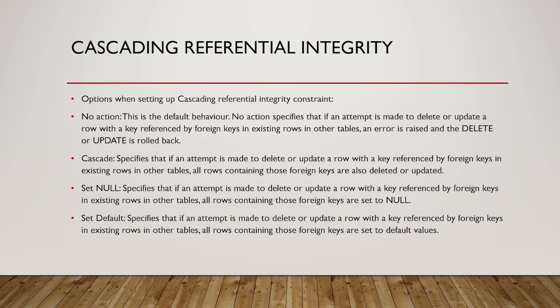There are four options for cascading referential integrity. No action is the default — you cannot delete records from the primary table where referencing records exist in another table; the delete is rolled back. Cascade means when we delete a row from the primary table, all related records in the other table are also deleted. Set null means those referencing records have their foreign key column set to null. Set default means those referencing records are set to the default value of that foreign key column.